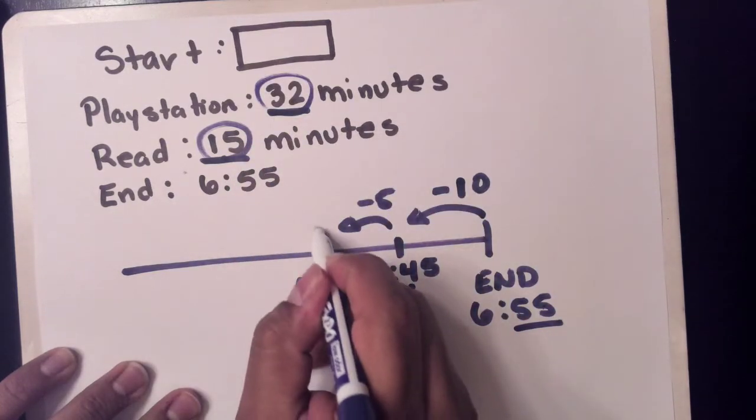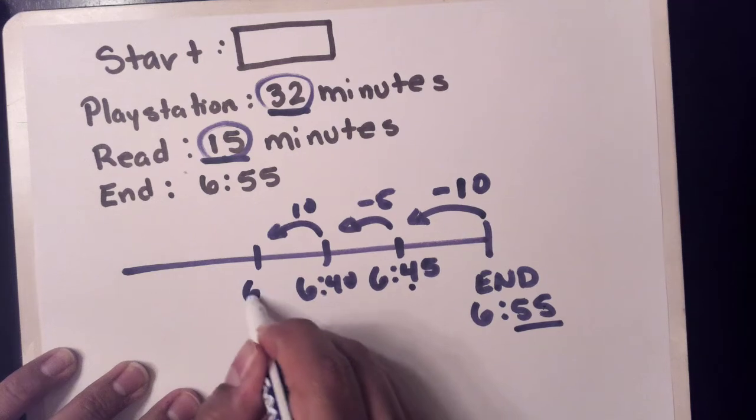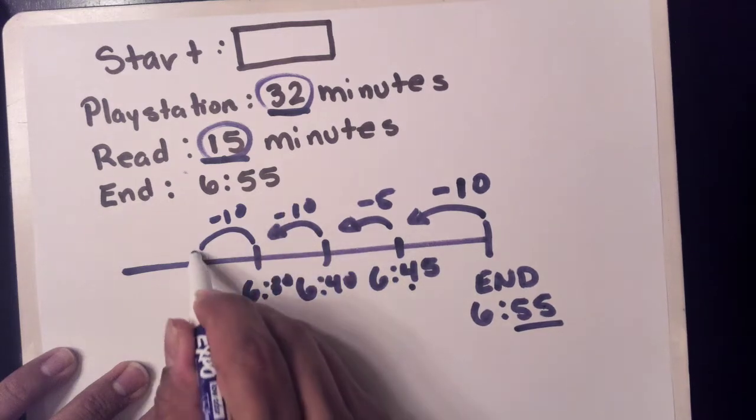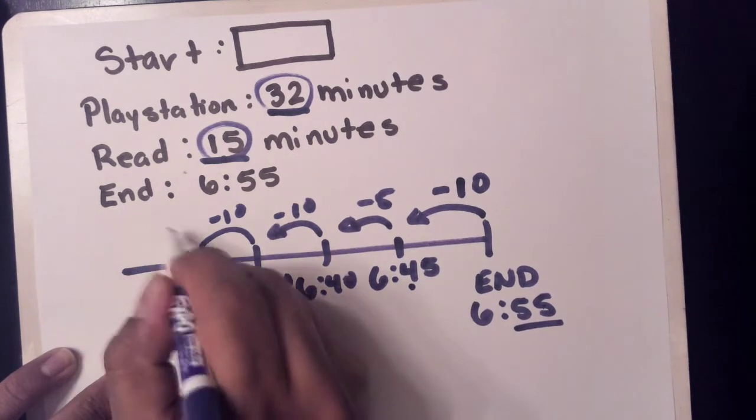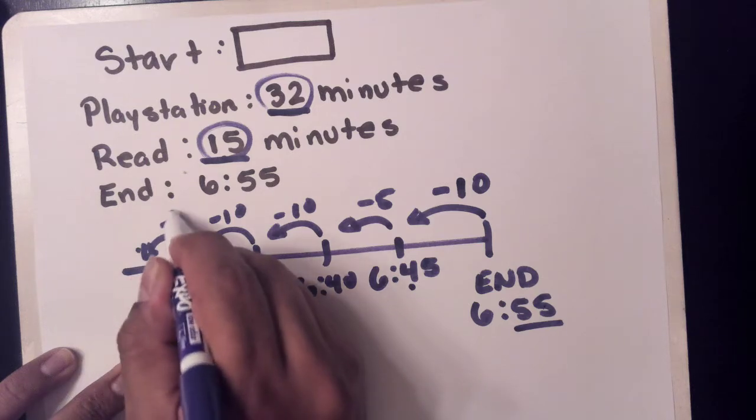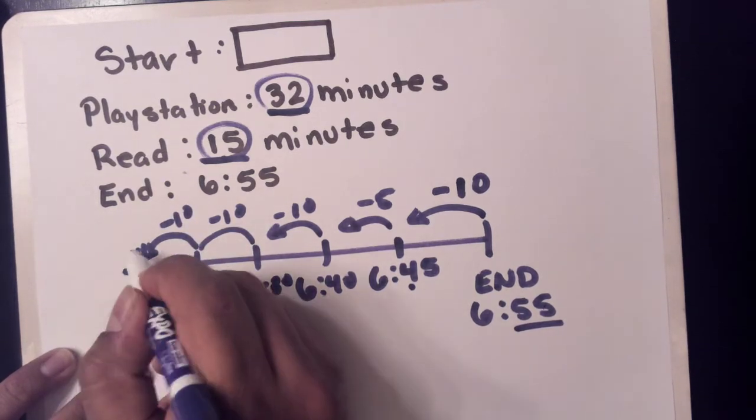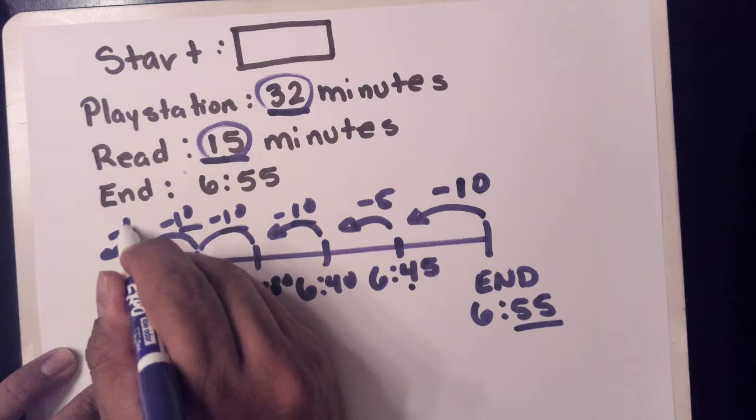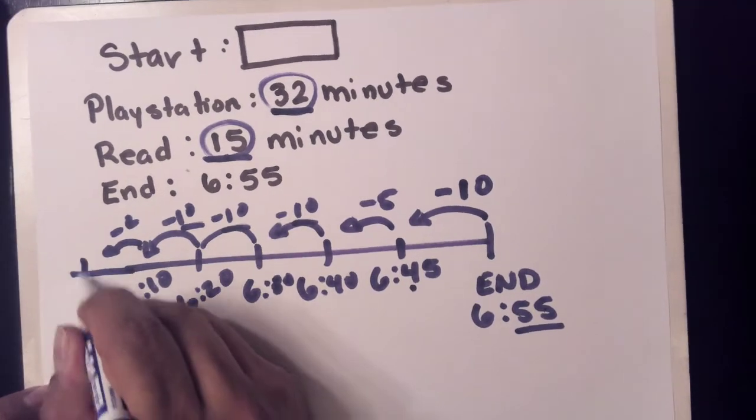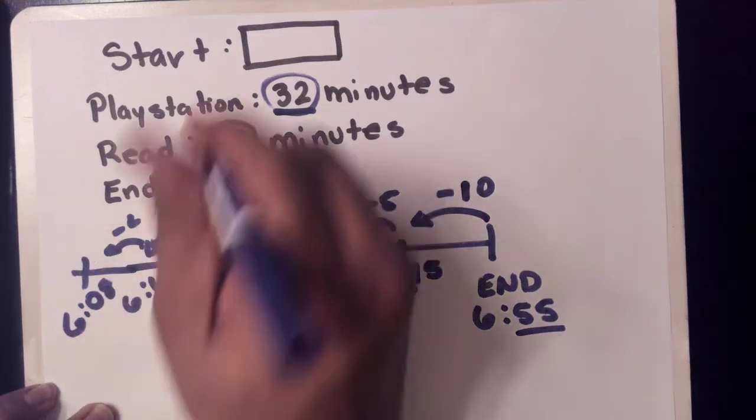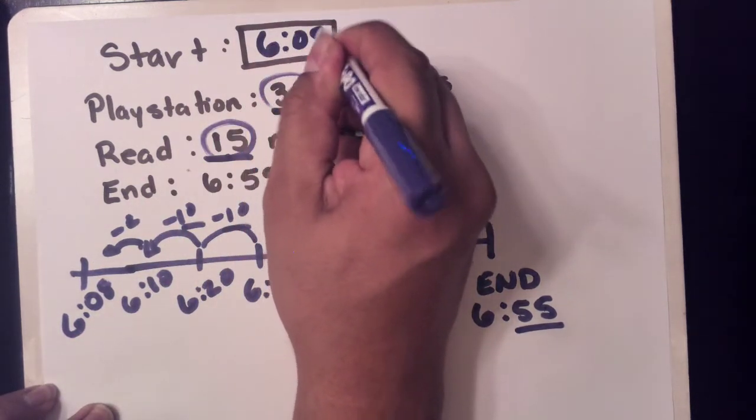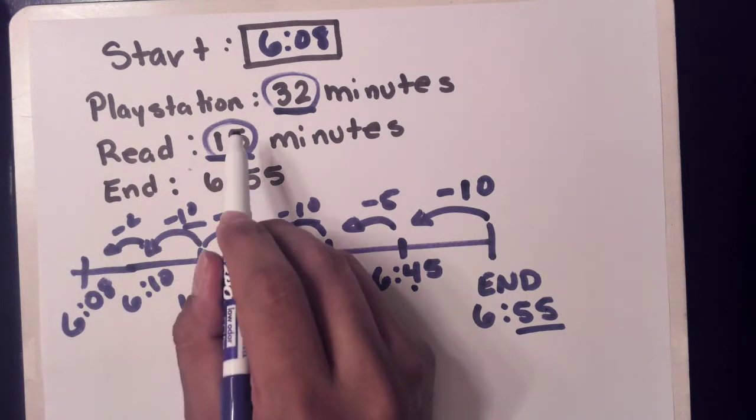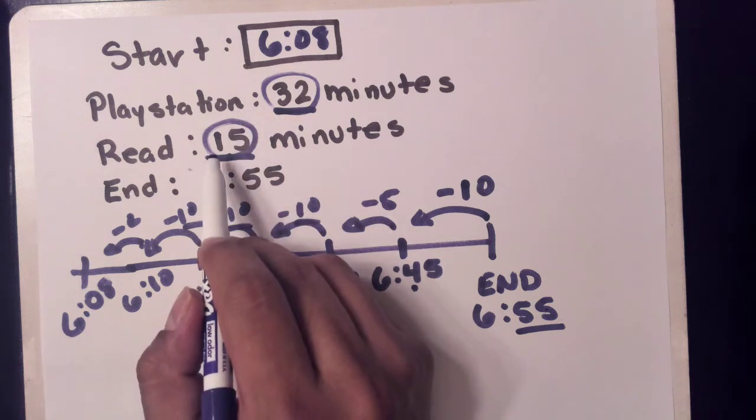Now we need to take away 32. So I'm going to take away 10: 6:30, minus 10: 6:20, minus 10: 6:10. And that's 10, 20, 30. I'm missing 2. Minus 2: 10 minus 2 is going to be 6:08. So if I ended at 6:55, at what time did I begin PlayStation and reading? I began at 6:08.